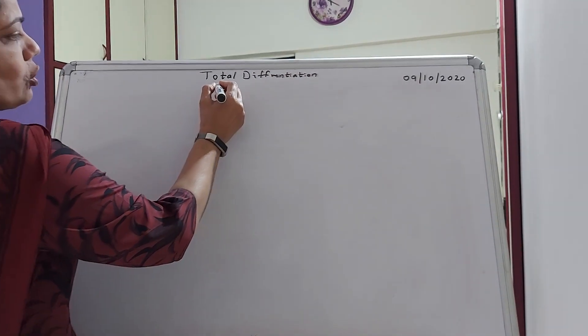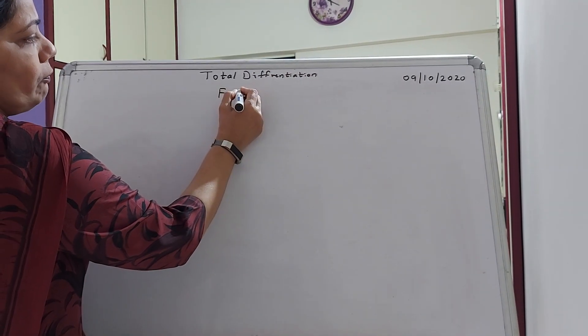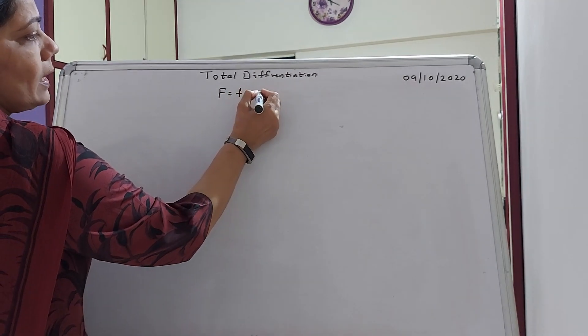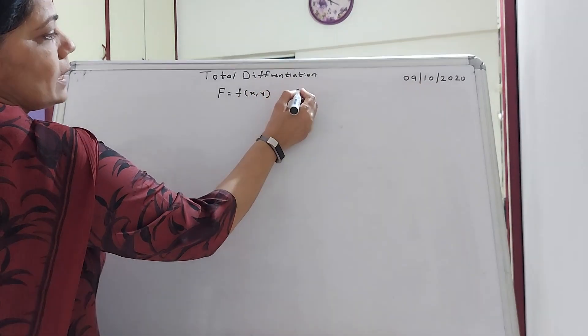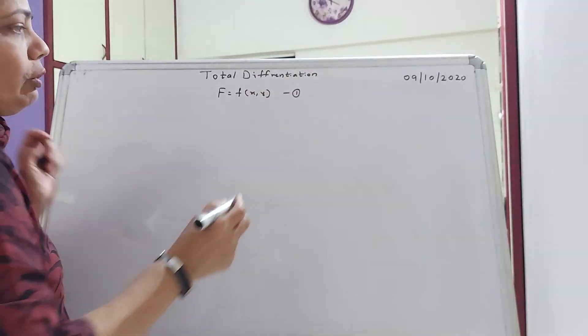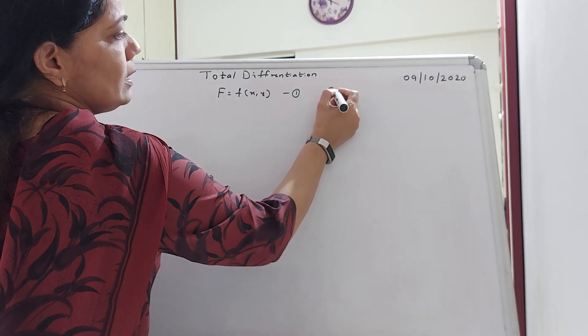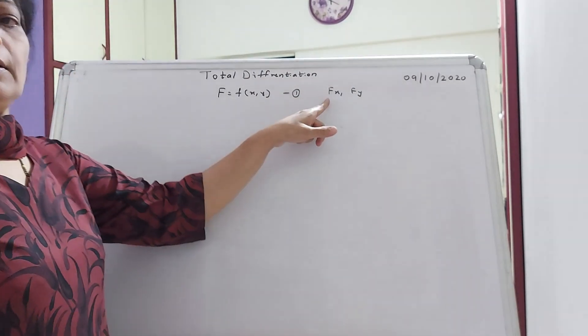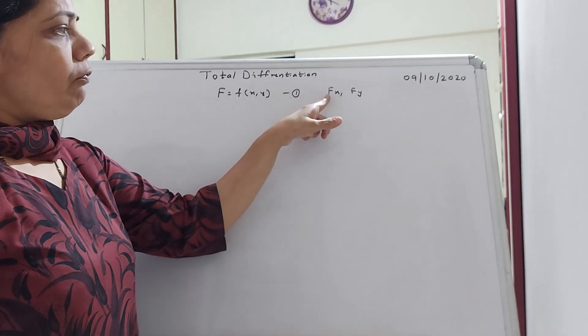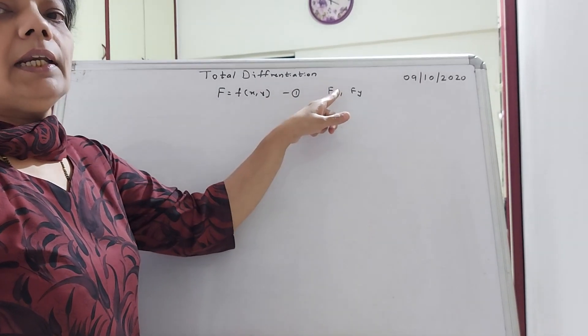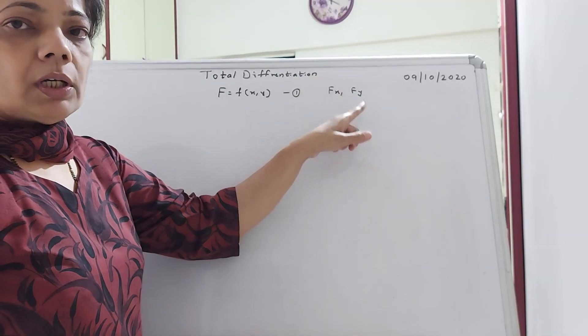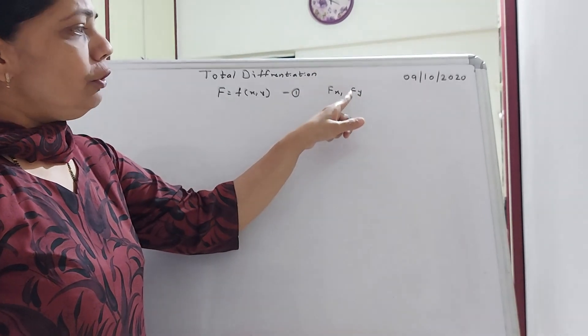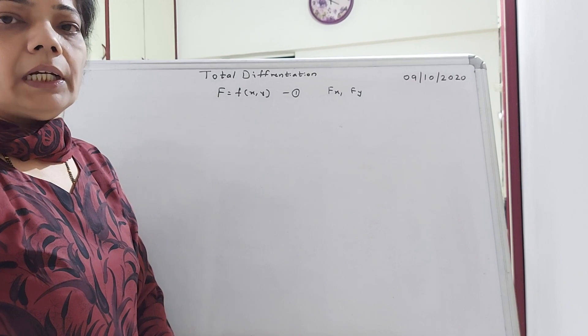Whenever you have a function F which is a function of two variables X and Y, this I see my equation number 1. So you have been taught what is Fx and what is Fy. Now what is Fx? A small change in F due to change in X. Fy is what? A small change in F due to a small change in Y.